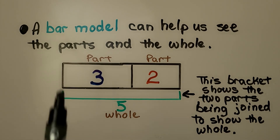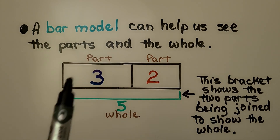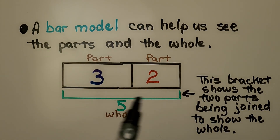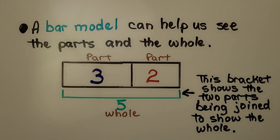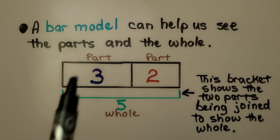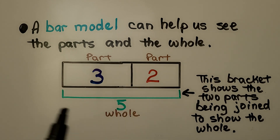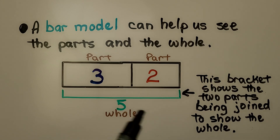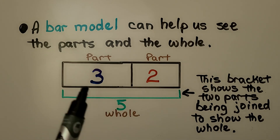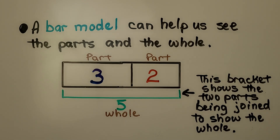This rectangle is a bar model. We have a bracket down here. A bar model can help us see the parts and the whole. The addends would be the parts and the whole would be the sum. This bracket down here shows the two parts being joined to show the whole.